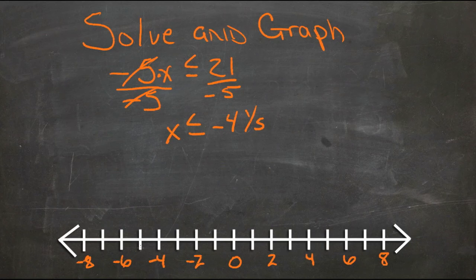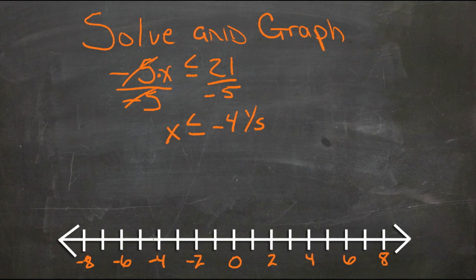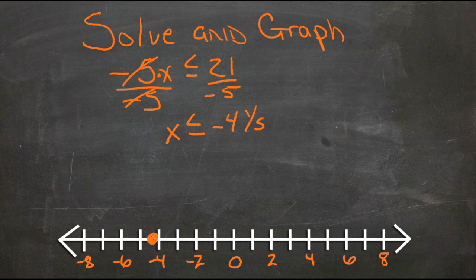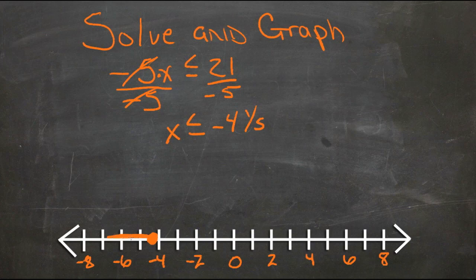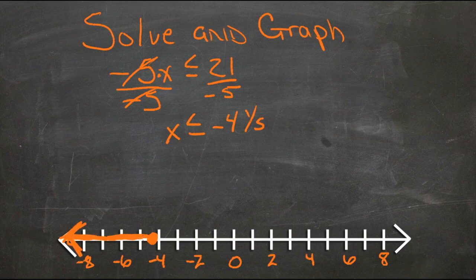So we find negative 4 and 1 fifth on our graph. It says that x can be less than or equal to that. So we'll draw a filled in circle and then shade to the left. And that's it.